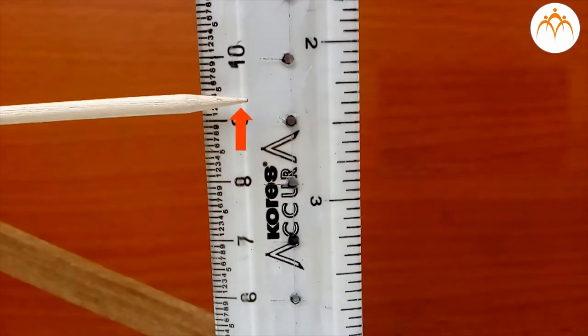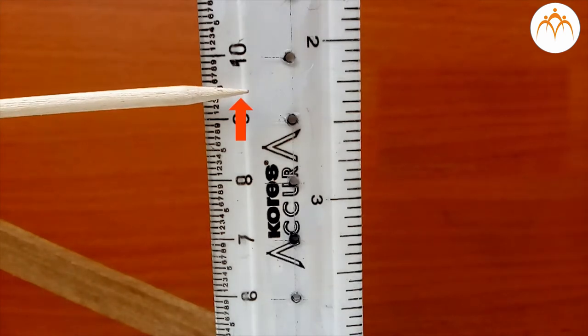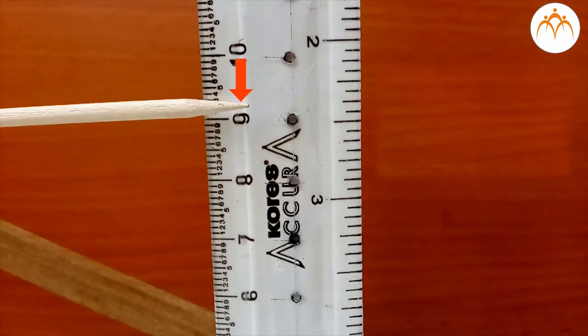Aluminum rod on expansion pushes the lever. This in turn moves the pointer on the scale upwards. Rod contracts on cooling and pointer moves down again.